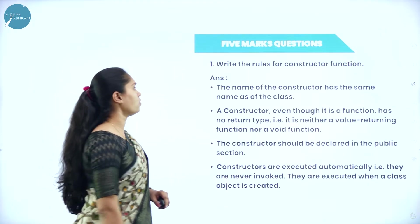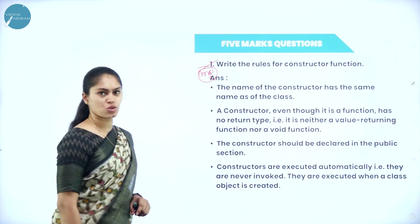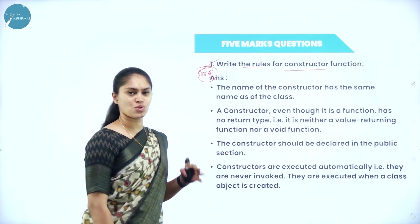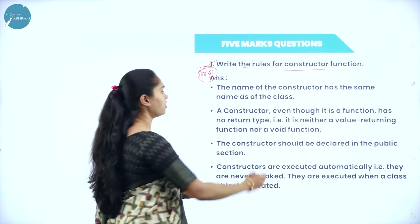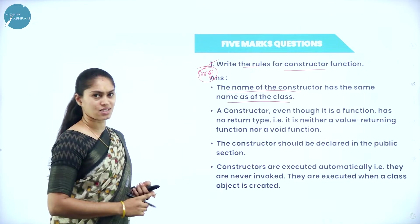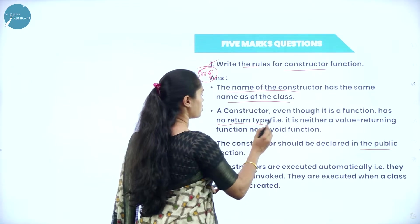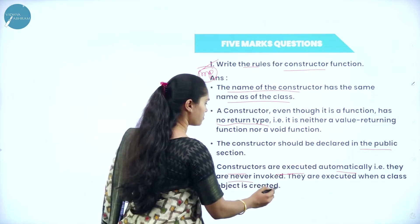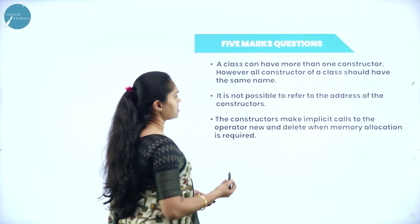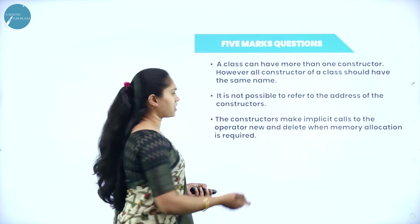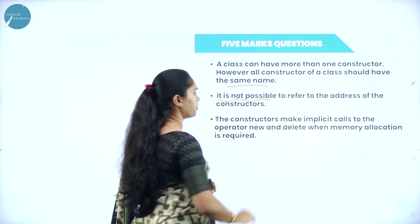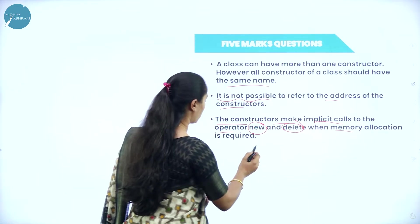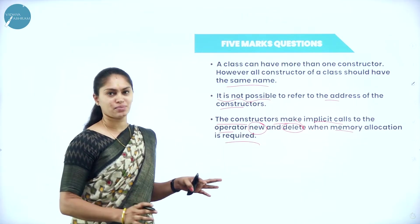Now we will see the five marks questions — very important questions. You can expect surely for your examination: write the rules for constructor function. The rules are: the name of a constructor must have the same name as of the class; it should be declared under a public section and does not have any return type; constructors are executed automatically when the objects are created; we can have any number of constructors in a class but every constructor must have the same name as of the class; it is not possible to refer to the address of a constructor; and the constructor makes an implicit call to the operators new and delete when memory allocation is required.